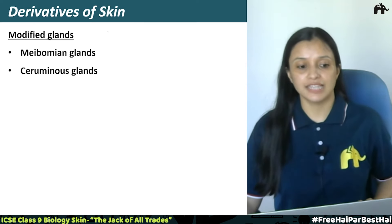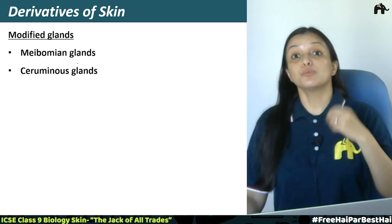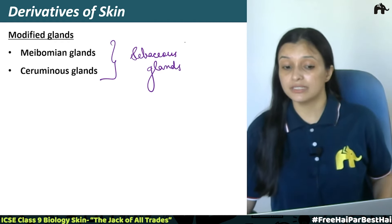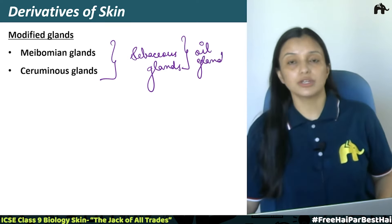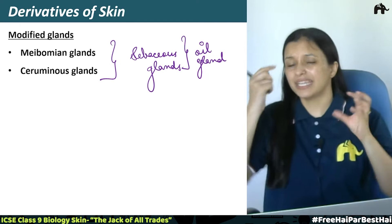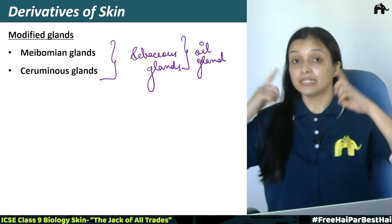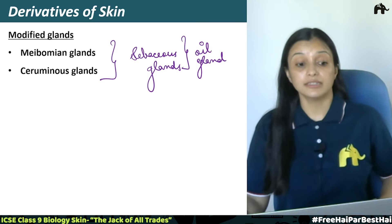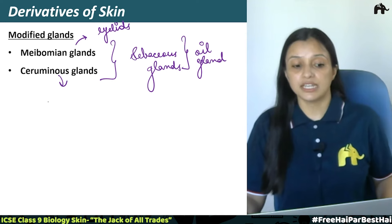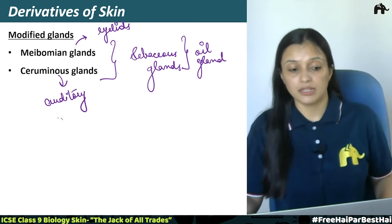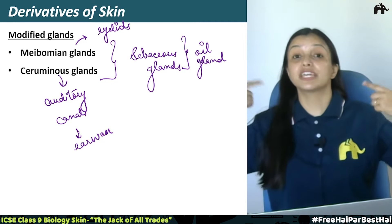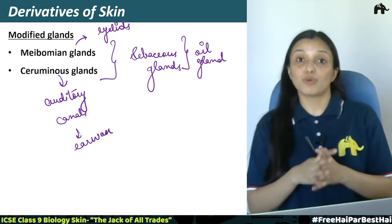There are some other modifications of glands. The first is the Meibomian glands — these are modifications of sebaceous glands present around our eyelids. Their secretion lubricates the eyelids and protects our eyes from excess secretion of tears. The second is the Ceruminous glands — also modifications of sebaceous glands — present inside our auditory canal. They secrete ear wax, which lubricates the auditory canal.